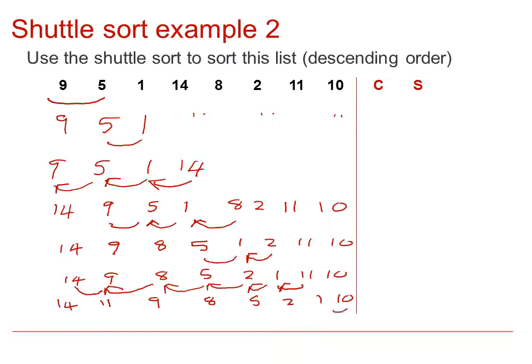Finally, the 10 again will swap its way down the list until we compare it to the 11 when it has no swap and it stops.